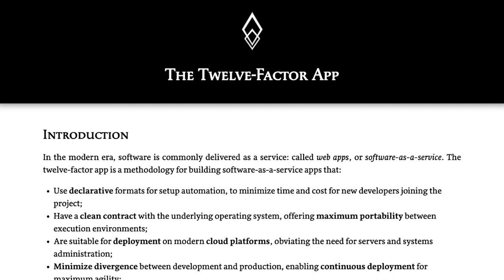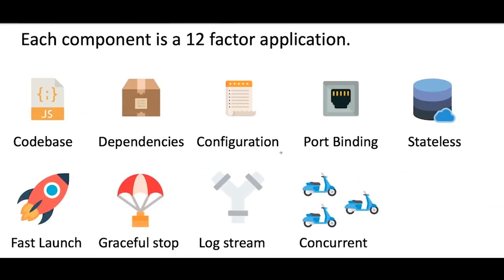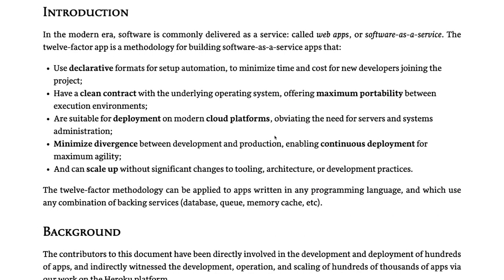Making your application compatible with the 12 Factor App — 12 Factor App is nothing but a set of principles which you can apply on your microservices, whether you are writing them in Java, Node.js Express, Node.js NestJS, or any other framework. The 12 Factor App principles cover things like codebase, dependencies, configurations, port binding, statelessness, fast launch, deployment, CI/CD, graceful stop, log streaming, and concurrency.